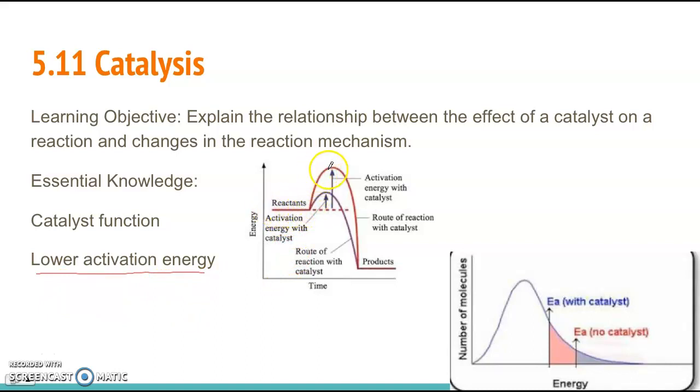So this would be an uncatalyzed reaction where you have that higher activation energy. If you add a catalyst, it just lowers that activation energy hill, and it makes it easier to get from reactants to products, and that speeds up the reaction. One thing, another thing you want to know is the energy of the reactants and the energy of the products, and the difference between those doesn't change. It just lowers the activation energy hill.